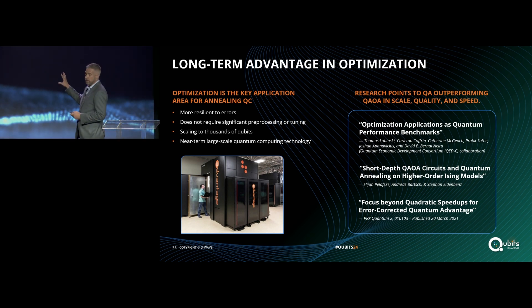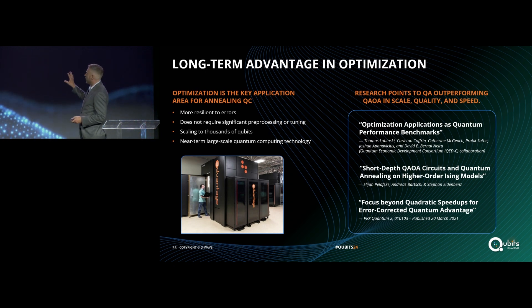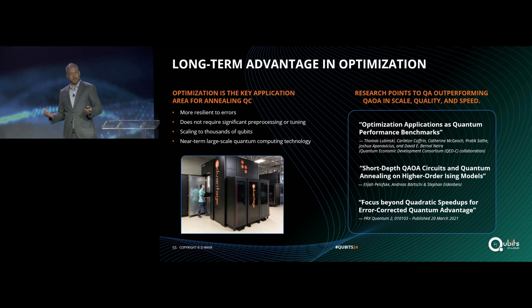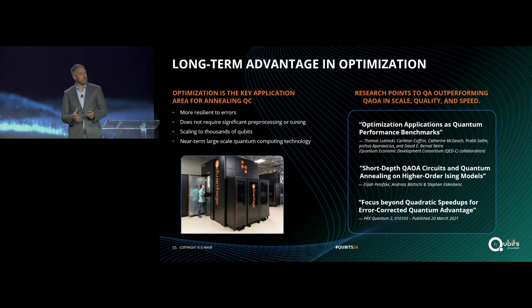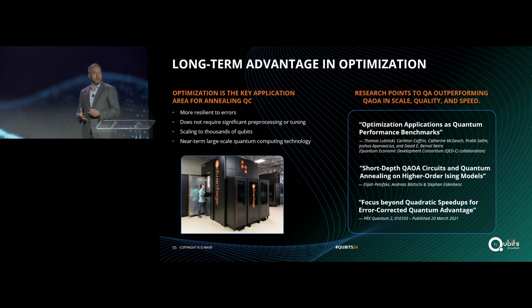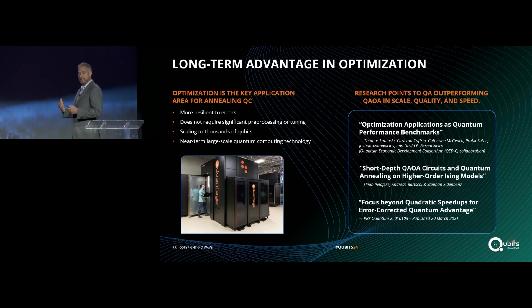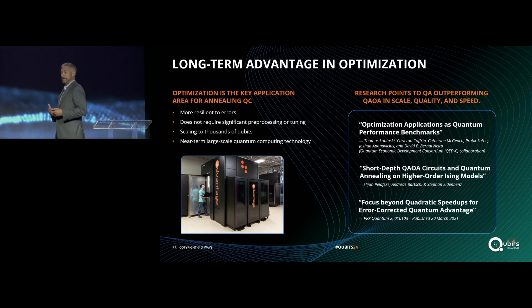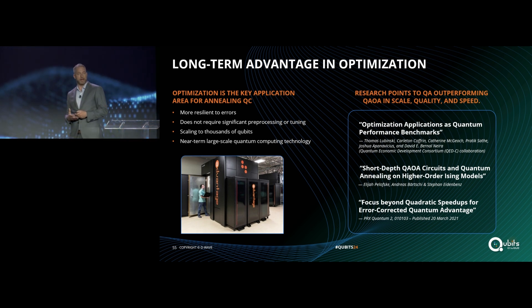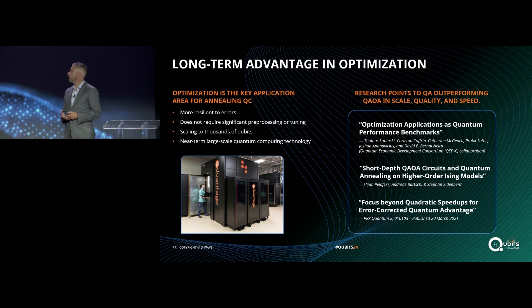There are several papers I want to call out. Alan talked this morning about optimization applications as quantum performance benchmarks. This is work from the QEDC group — a third-party group that did a QPU-to-QPU comparison of a key optimization use case, max cut, and showed that both in scale, solution quality, and time to solution, there is a gap opening up between annealing quantum computing and the emerging gate model platforms.